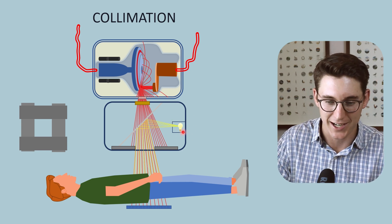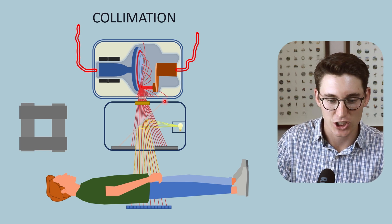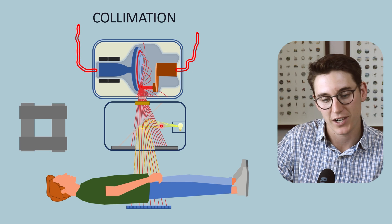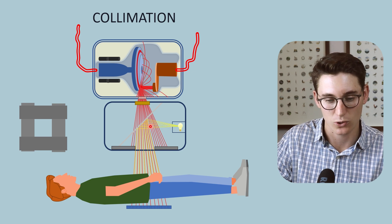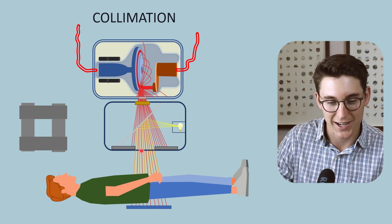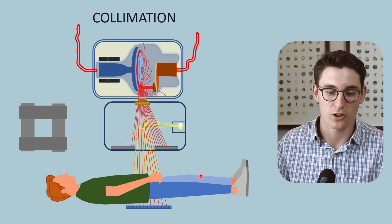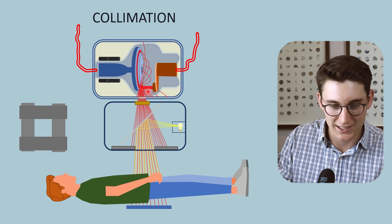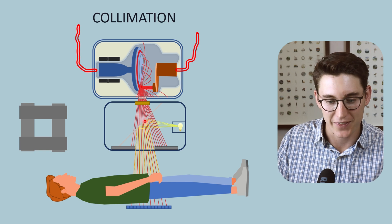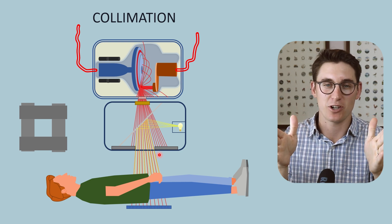There is a light source within our collimator machine that shines light onto a mirror. That mirror is at 45 degrees to the light source, and the light bounces off in parallel to our x-ray beam. So the light exiting our collimator is congruent with the x-rays released from the collimation machine. Since we can't see x-rays — they're not in the visible light spectrum — this light allows us to see exactly where we are collimating the x-ray beam. It matches the x-ray beam.